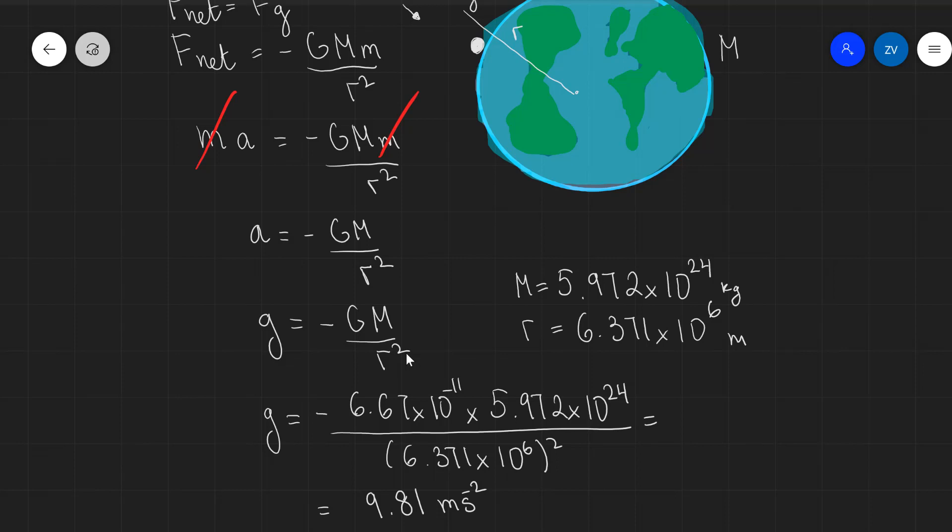The value on the surface of the Earth is minus 9.81 meters per second squared. The minus sign typically signifies that the acceleration is due to an attractive force. Okay folks, thank you very much for watching and I'll see you in the next video.